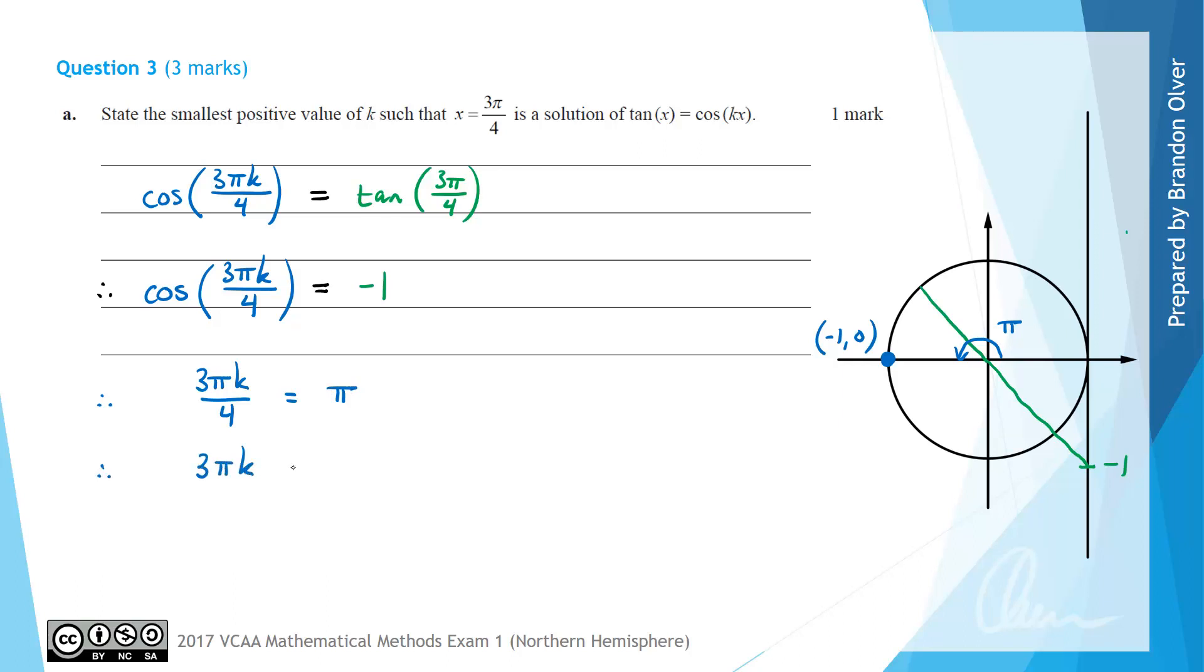And now solving that for k, we can start by going 3πk equals 4π. And dividing both sides by 3π, we find that k must equal 4/3. So that is the smallest positive value of k, such that x equals 3π/4 is a solution to that equation.